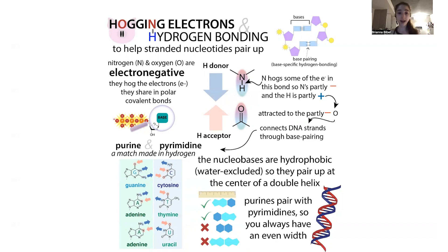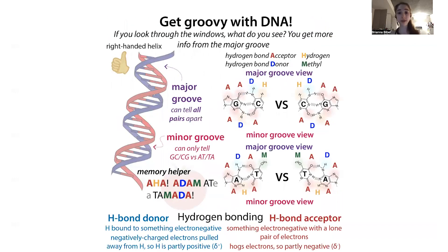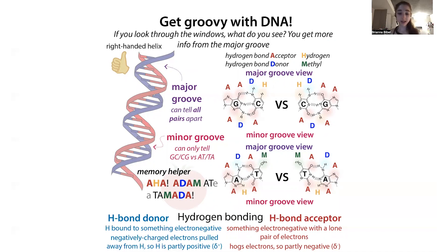You always need a purine and a pyrimidine together to maintain constant helix width. In this helix, the minor groove lets you distinguish GC/CG from AT/TA but not G from C or A from T. The major groove lets you tell them all apart. For AT versus TA remember 'Aha! Adam ate a tomato.' Those are the memory tricks to help you remember terminology regarding nucleic acids.